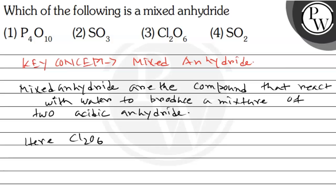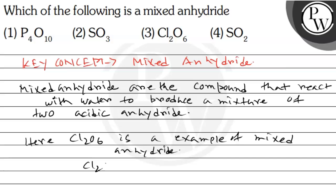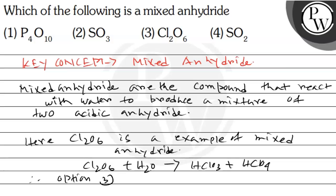Cl2O6 is the example of a mixed anhydride. Cl2O6 reacts with water to produce HClO3 plus HClO4. Therefore, option 3 is the correct answer.